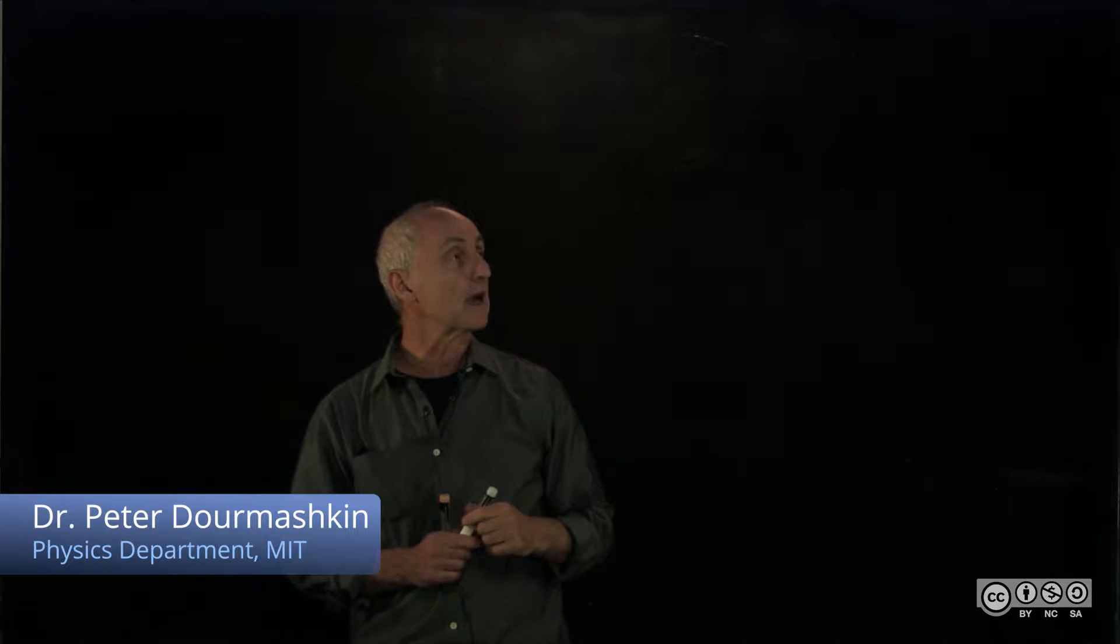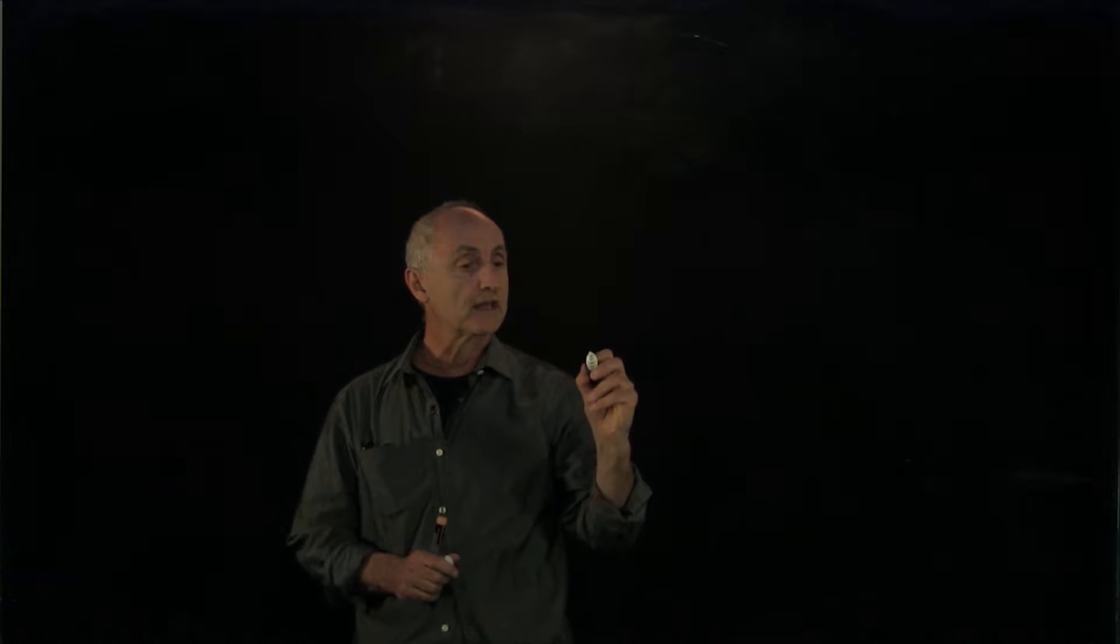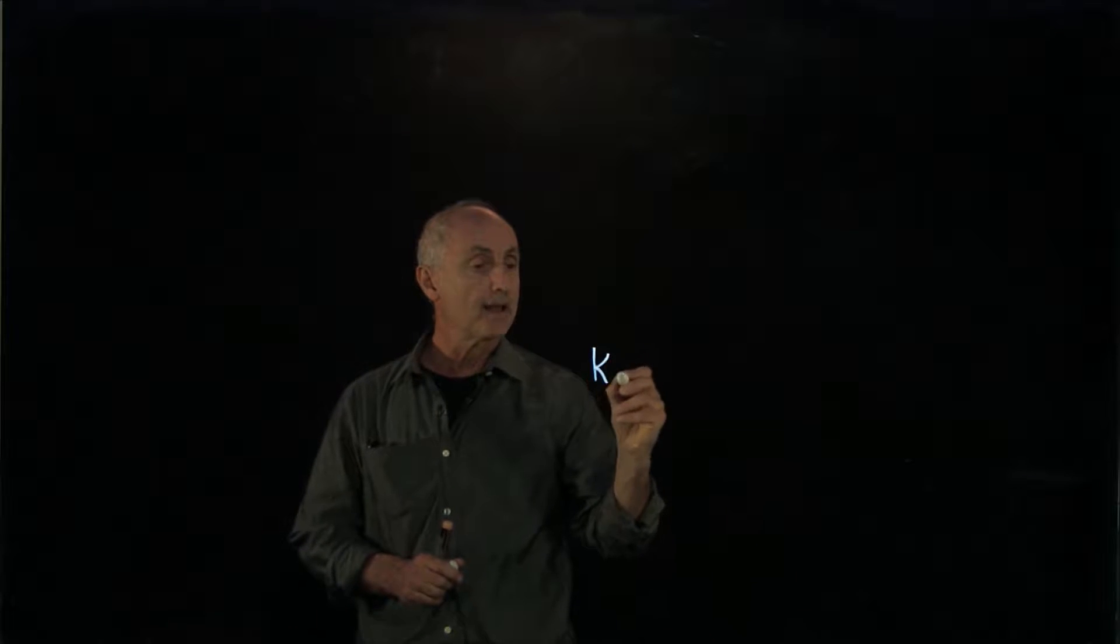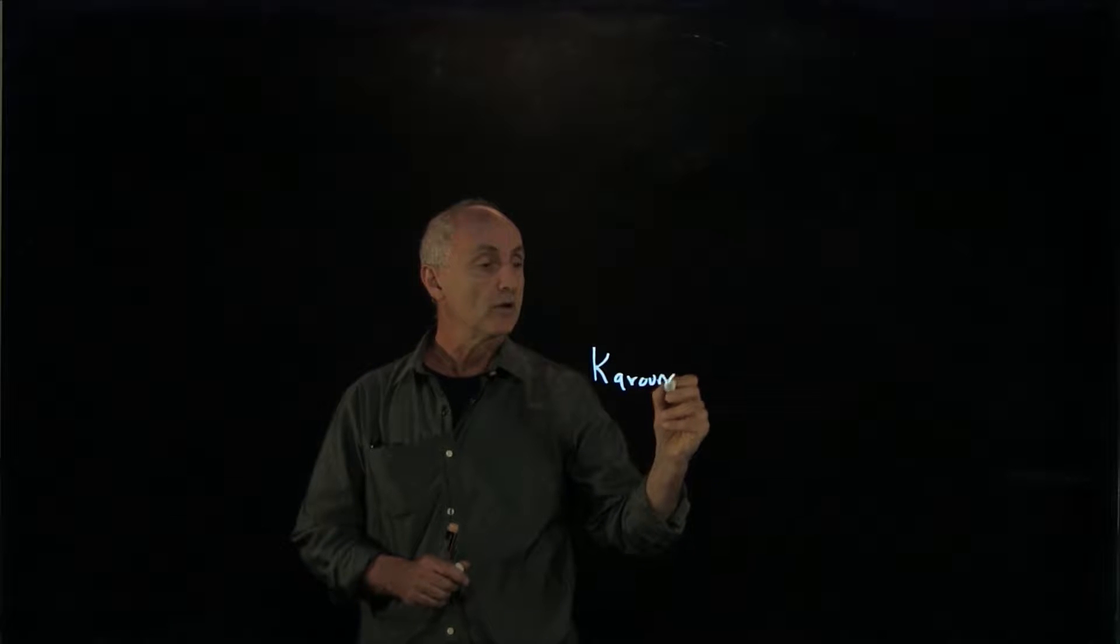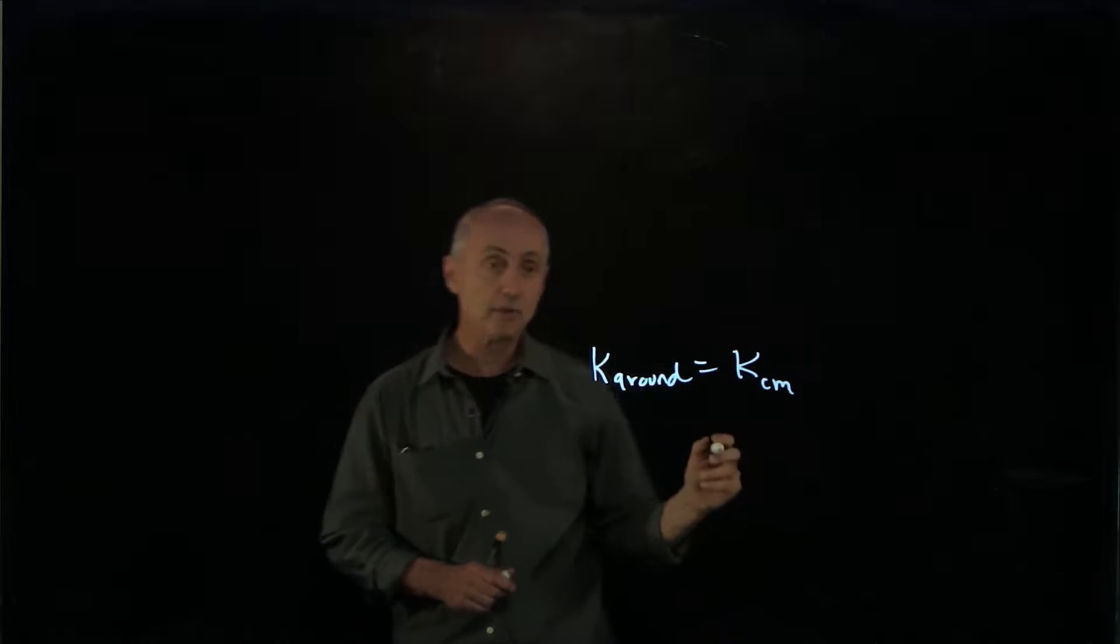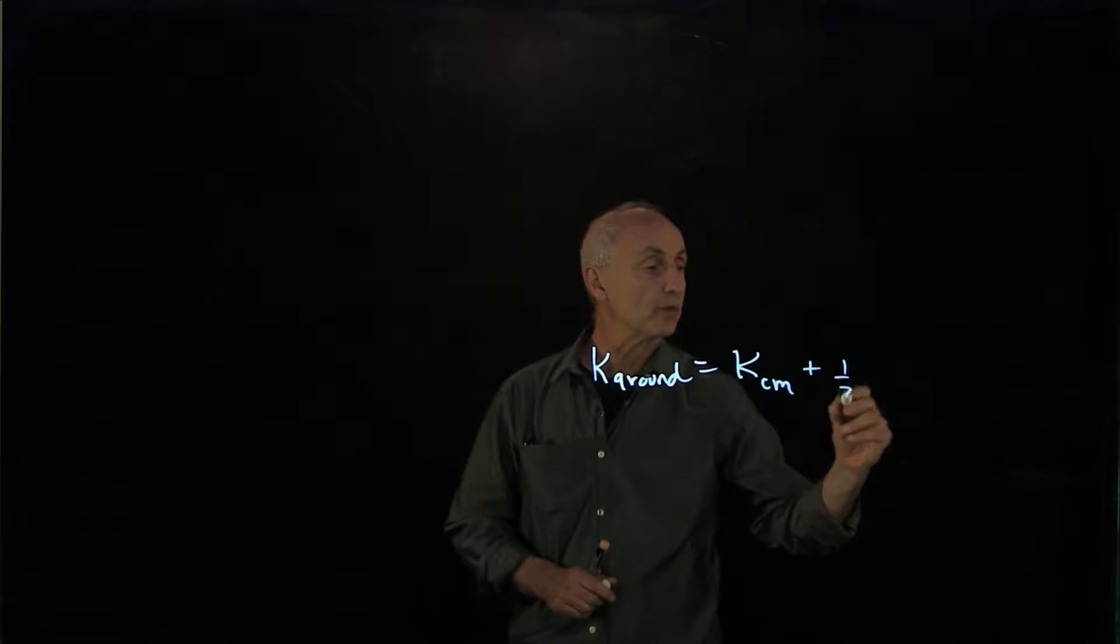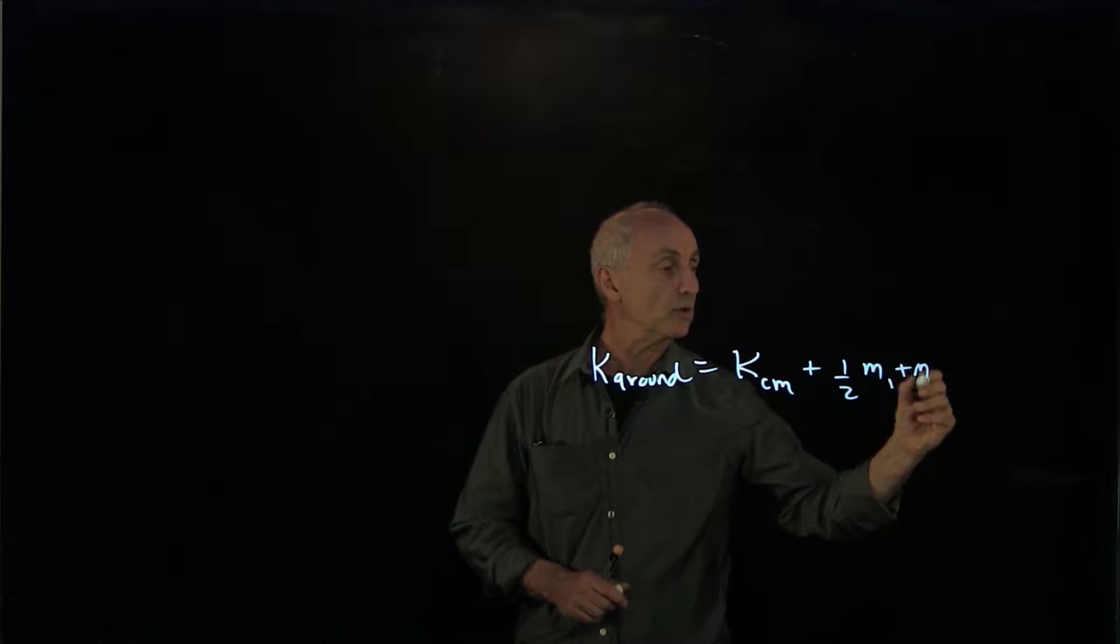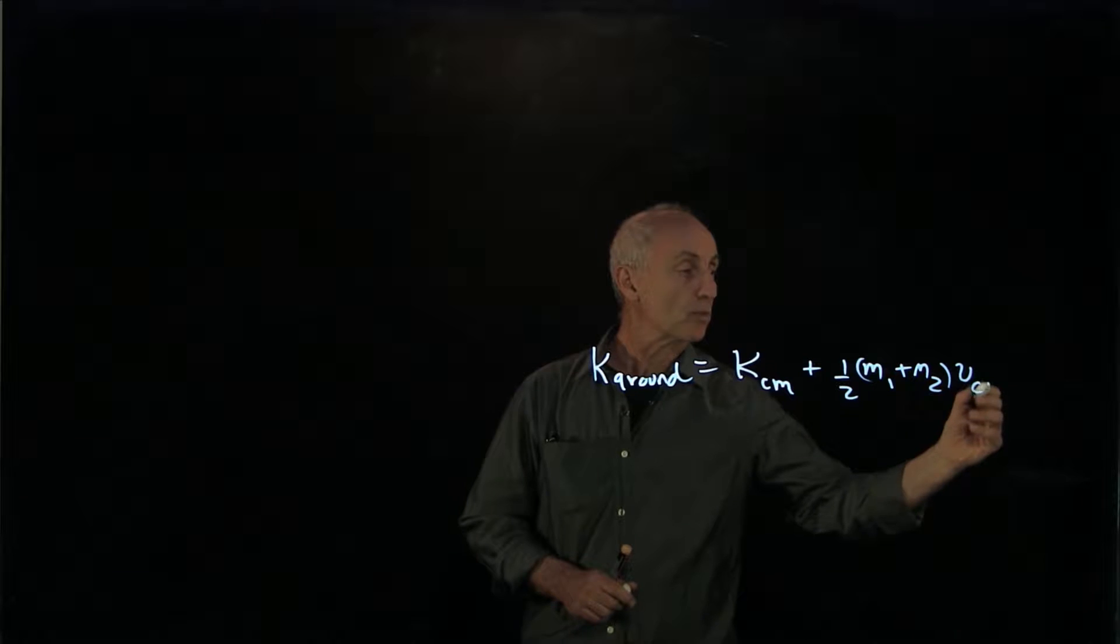When we did these calculations, we saw that the kinetic energy in the ground frame was equal to the kinetic energy in the center of mass frame plus a constant term, m1 plus m2, times vcm squared.